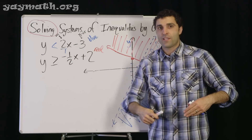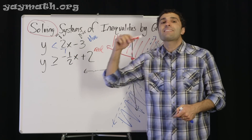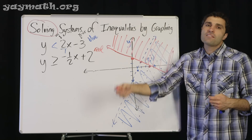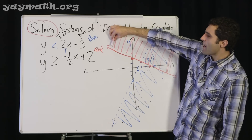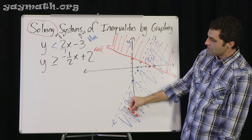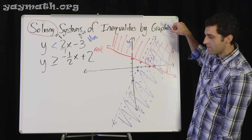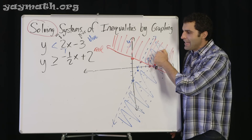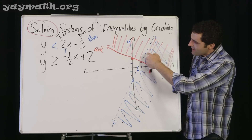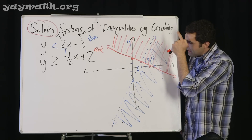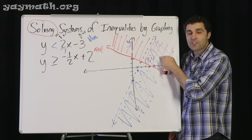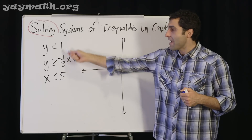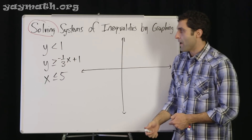So we're shading everything above the line. The solution for this system — two or more equations together — is every area that works for both. It's not just the red stuff that matters, and not just the blue stuff that matters. It's the purple stuff — the overlap. That's where we need to live, and that is the solution for this system.